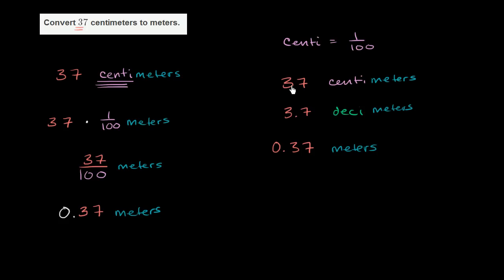So one way to think about it is to go from centimeters to meters, you're going to divide by 100. Dividing by 100, you would move the decimal space over to the left two times. Doing it once divides by 10. Doing it twice divides by 100. So you get to 0.37 meters.